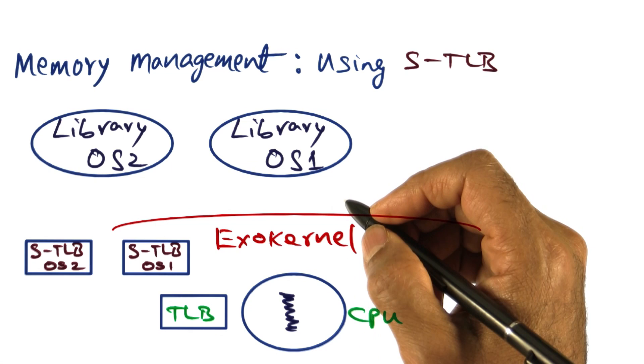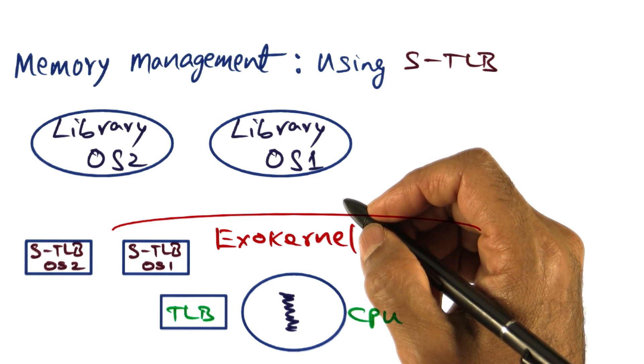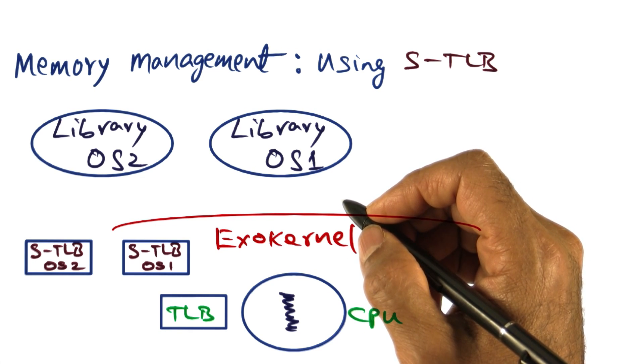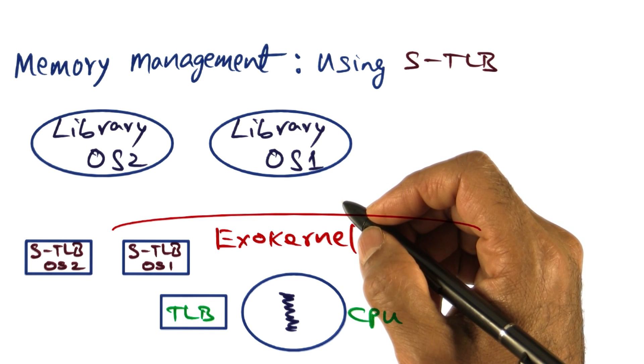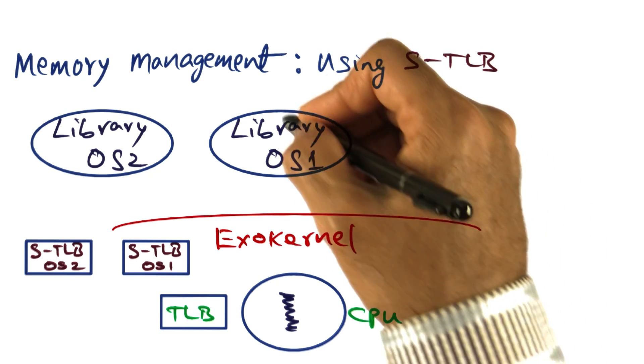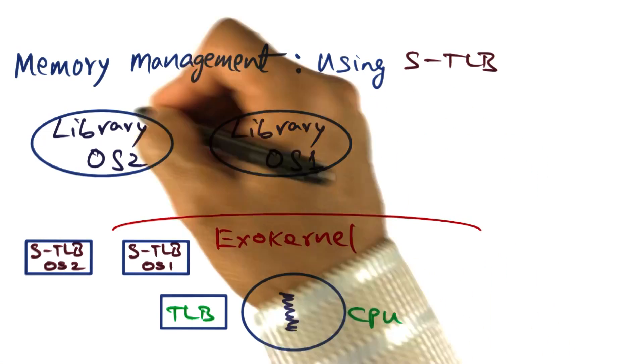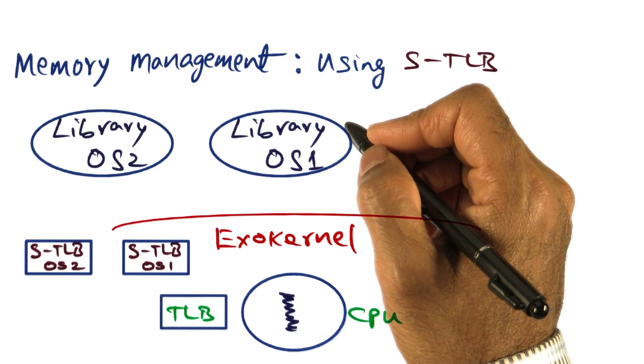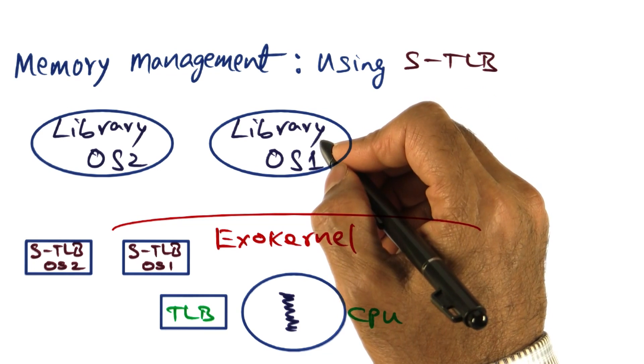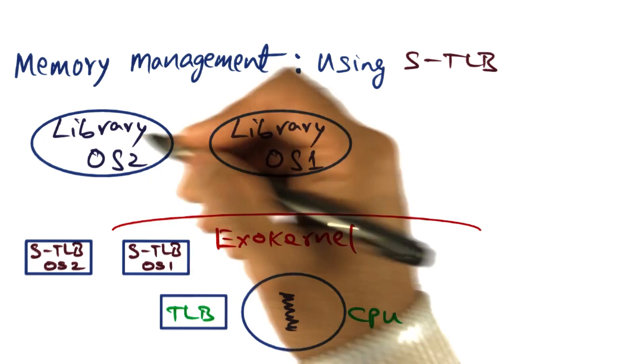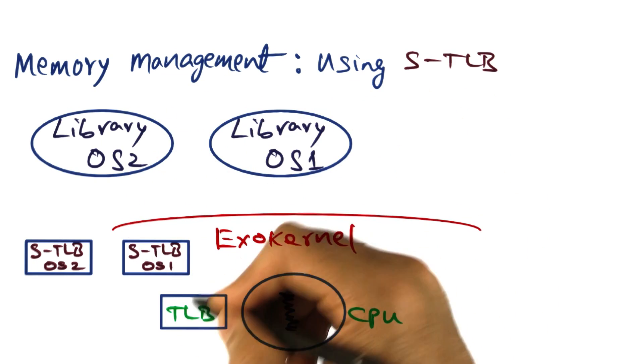As we know, when we have a context switch, one of the biggest sources of performance loss is the fact that you're losing locality for the newly scheduled process. Since the address space occupied by this library operating system and this library operating system are necessarily completely different, when we switch from one library operating system to another, we have to flush out the entire TLB.